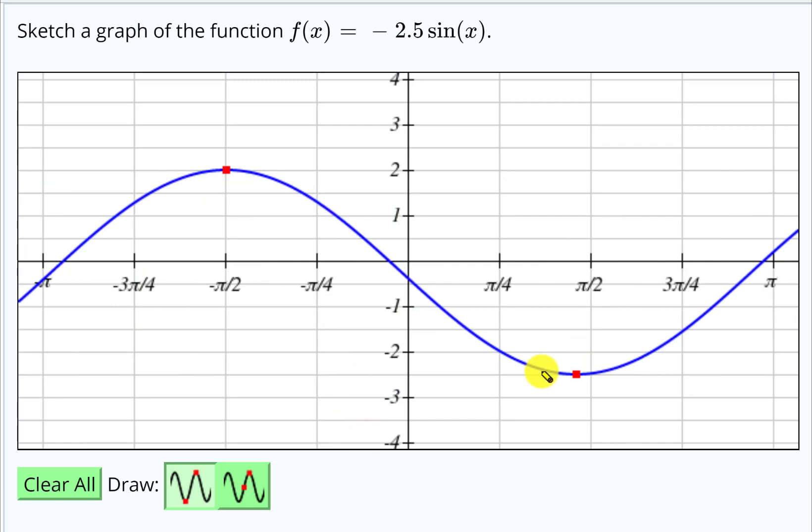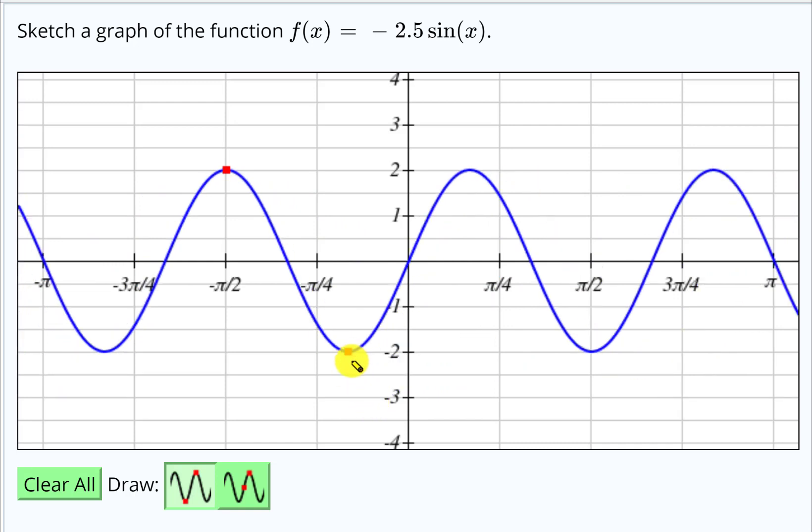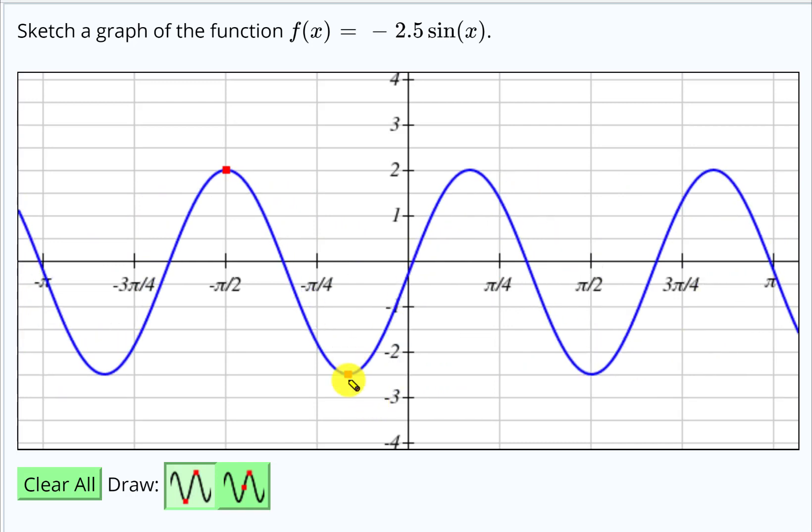Notice that with that second point, I can move it in or out to get the period in the right place, and I can also move it up or down to get the minimum in the right place. If you mess up and don't put the graph you want, you can clear it and start again.